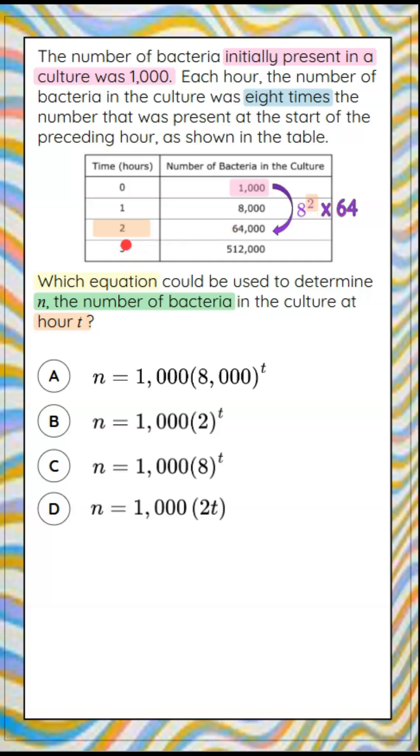1,000 to 64,000, multiply by 64, which in terms of eight is eight squared. Eight squared is 64, the squared representing the second hour. So I can see that it is indeed an exponential function, which tells me I can eliminate answer choice D because this equation does not have the variable T as an exponent like the other three.